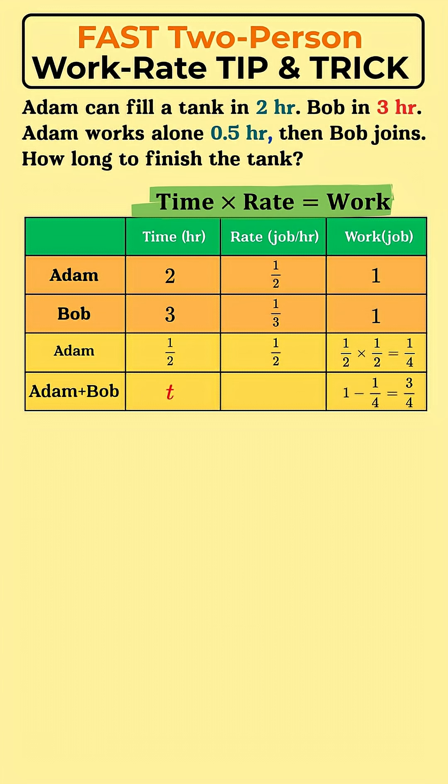Step 4: Find their combined rate for Phase 2. Now they work together. Just add their rates: 1 half plus 1 third is 5 sixths.